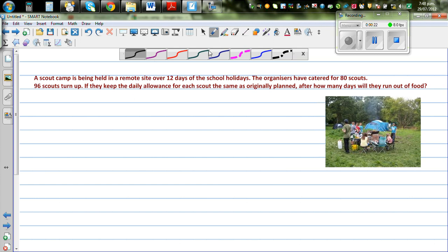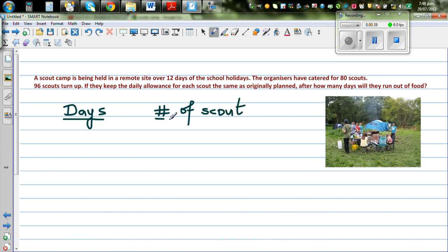Okay, so here again this is a problem of inverse proportions. So let me write days and scouts, number of scouts. So as planned, what they are saying is, if this was planned for 12 days camp and there was enough food for 80 scouts. Now there are 96 scouts turn up.